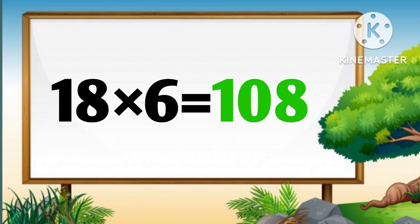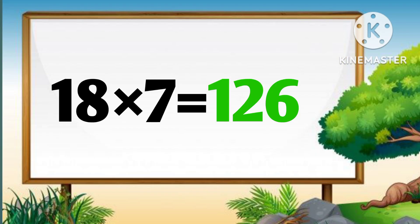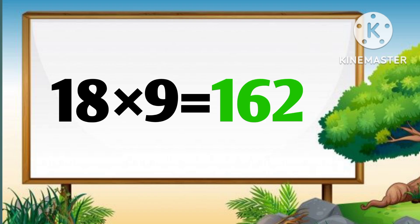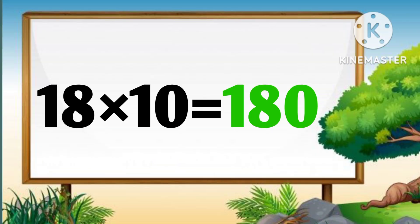Eighteen sevens are hundred twenty-six. Eighteen eights are hundred forty-four. Eighteen nines are hundred sixty-two. Eighteen tens are hundred eighty.